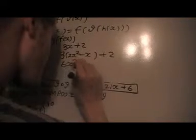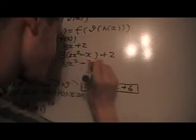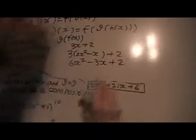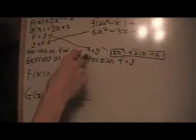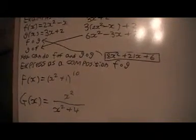I get 6x squared, minus 3x, plus 2. That's a pretty easy problem. Now, you can also find f of f and g of g. I can let you try and do that, if you like.